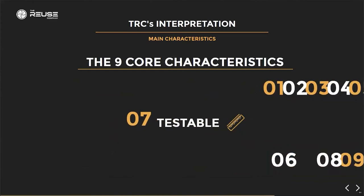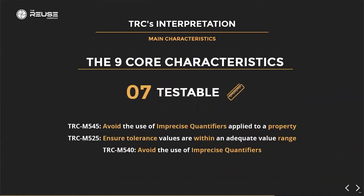The seventh characteristic is testability — we must be able to verify the requirement; if it is not verifiable it is not testable. Metrics include: avoiding the use of imprecise quantifiers applied to specific properties, as they make measurement complicated; ensuring tolerance values are specified so bonus values fall between a defined range; and a general metric avoiding imprecise quantifiers that can be tailored to the project situation.